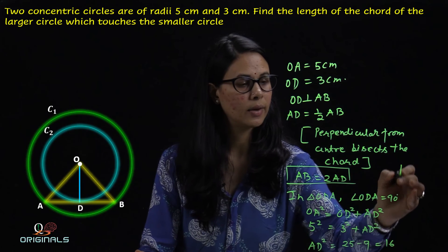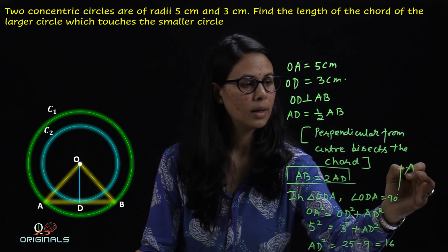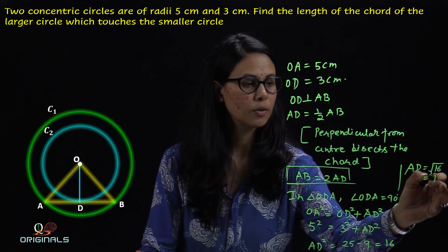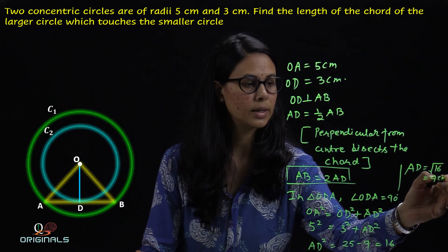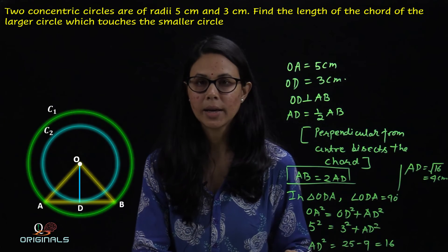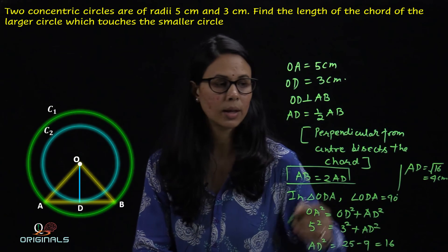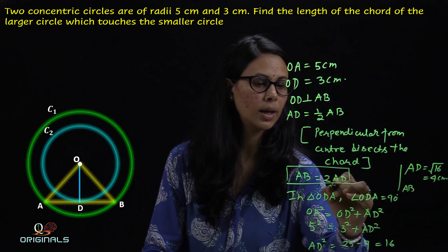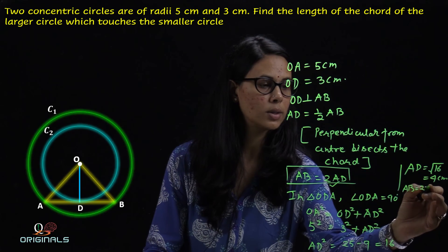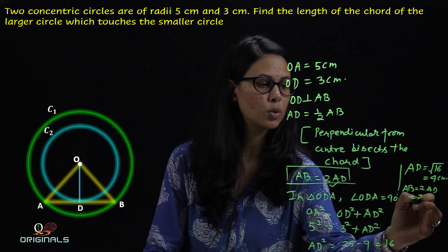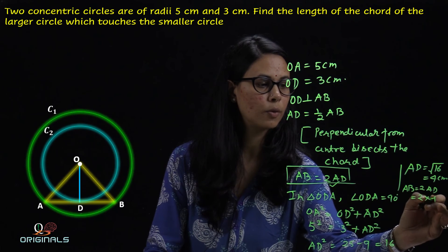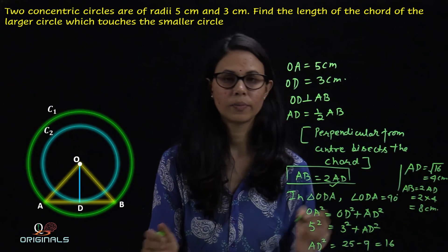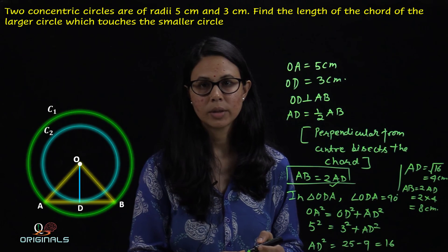So, AD is equal to root of 16, it means 4 cm. अगर AD 4 cm है, तो AB कितना होगा? AB हमको पता है, twice of AD है — which means 2 × 4 = 8 cm. तो AB की value 8 cm है.